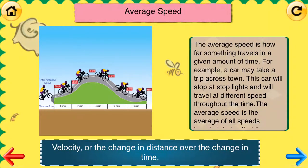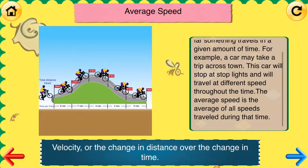Average speed: velocity, or the change in distance over the change in time. The average speed is how far something travels in a given amount of time. For example, a car will make a trip across town. This car will stop at stoplights and will travel at different speeds throughout the time. The average speed is the average of all speeds traveled during that time.